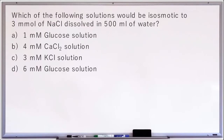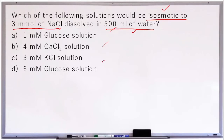Which of the following solutions would be isosmotic to 3 millimoles of sodium chloride dissolved in 500 ml of water? Here we have to compare osmotic strength of sodium chloride with other solutions and find which has similar osmotic strength. Osmotic strength refers to the number of osmotically active particles in a given solution, and we use the unit osmolarity — the number of active particles in one liter of solution.